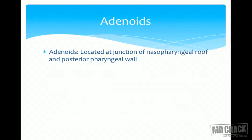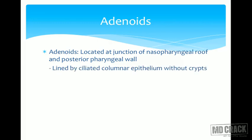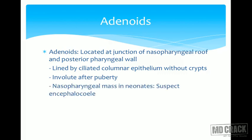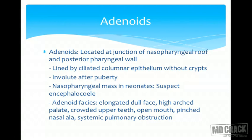Adenoids are located at the junction of the nasopharyngeal roof and the posterior pharyngeal wall, lined by ciliated columnar epithelium. Unlike tonsils, adenoids do not have crypts. They involute after puberty around age 12 to 13. A nasopharyngeal mass in neonates should always raise suspicion of encephalocele. Adenoid facies result from mouth breathing due to enlarged adenoids and are characterized by elongated dull face, high arched palate, crowded upper teeth, open mouth, pinched nasal ala, and systemic pulmonary obstruction.